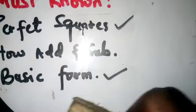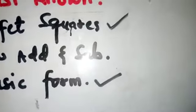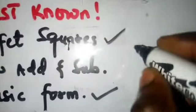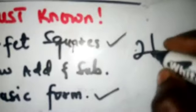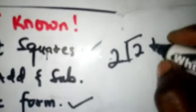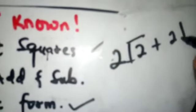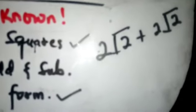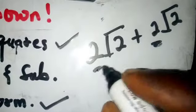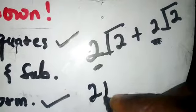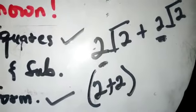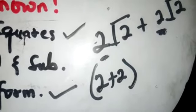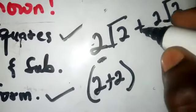Let me explain the addition and subtraction of surds. If I have root 2 plus 2 root 2, how do you add these? You add outside to outside — the number attached to the surd. That is the law you must obey. So this gives me 2 plus 2, keeping root 2.